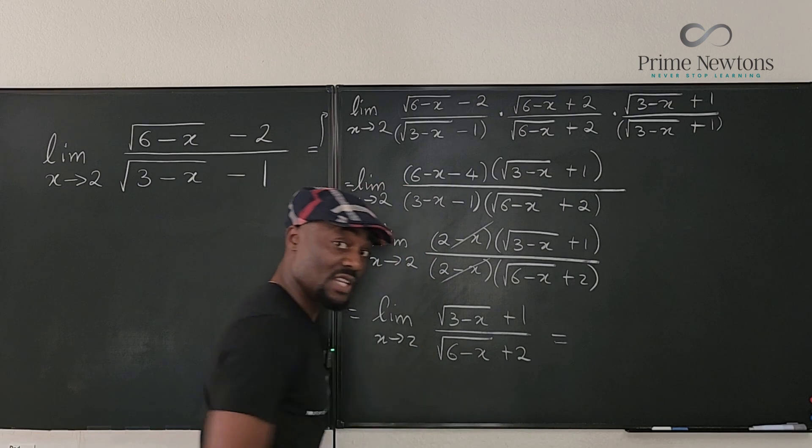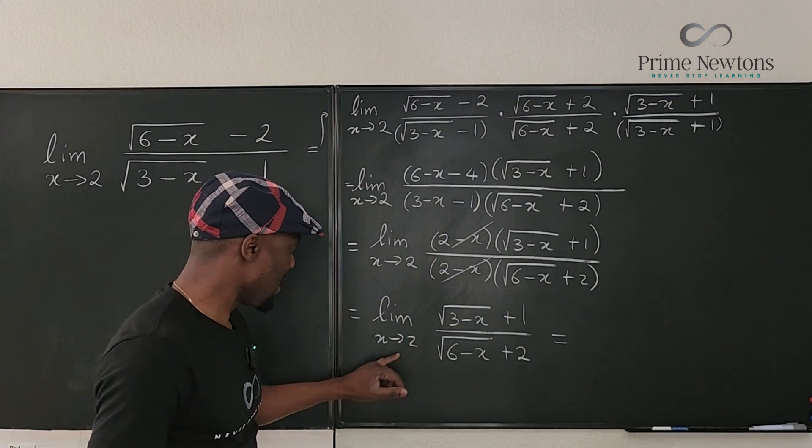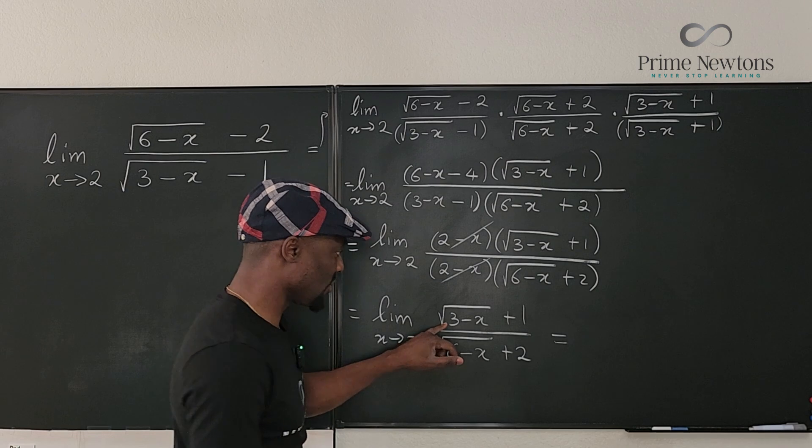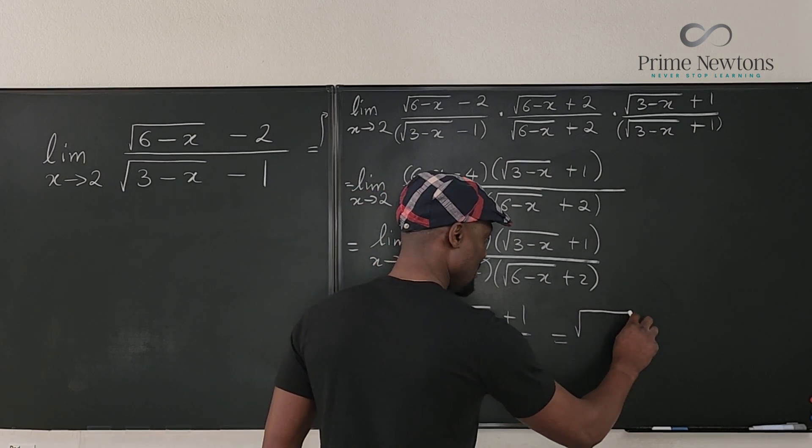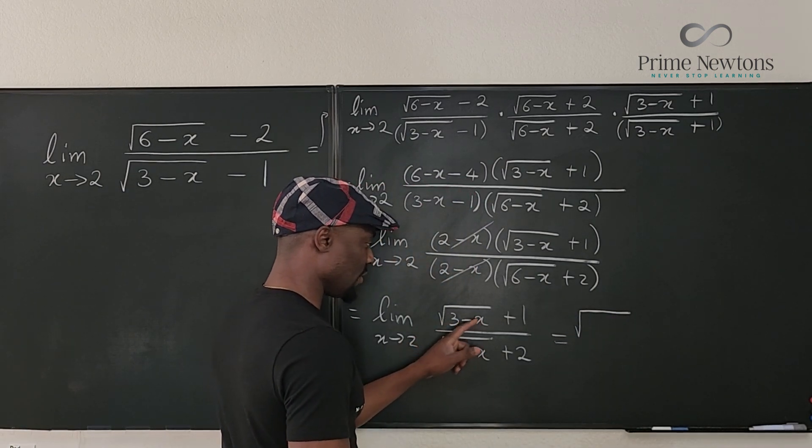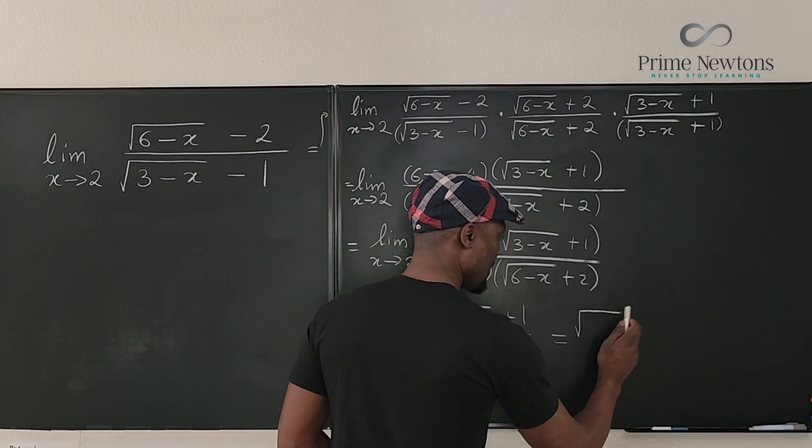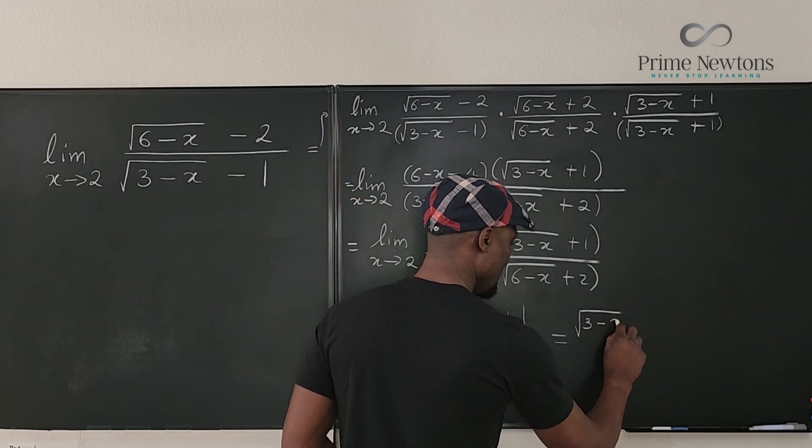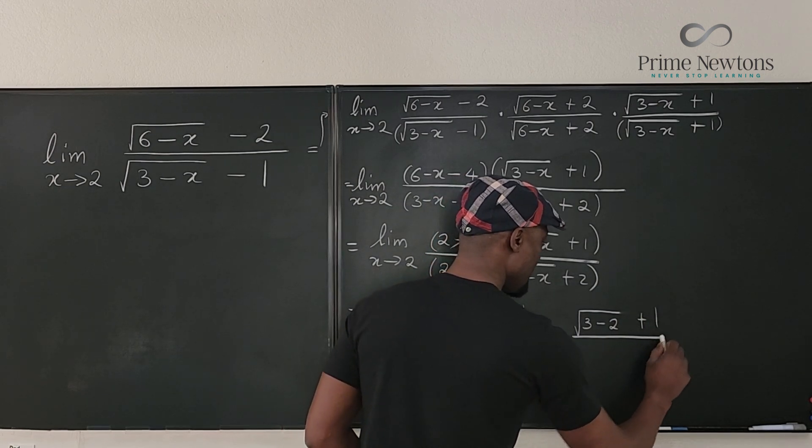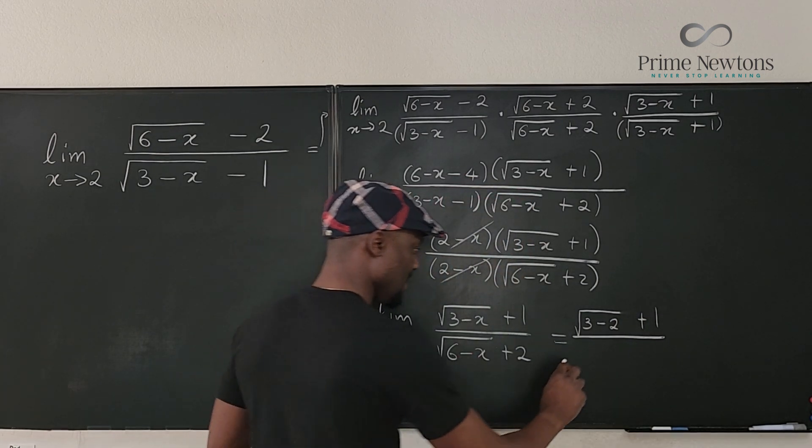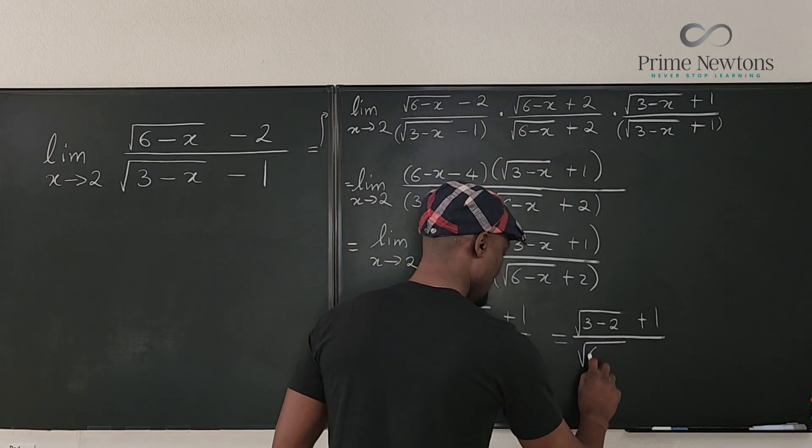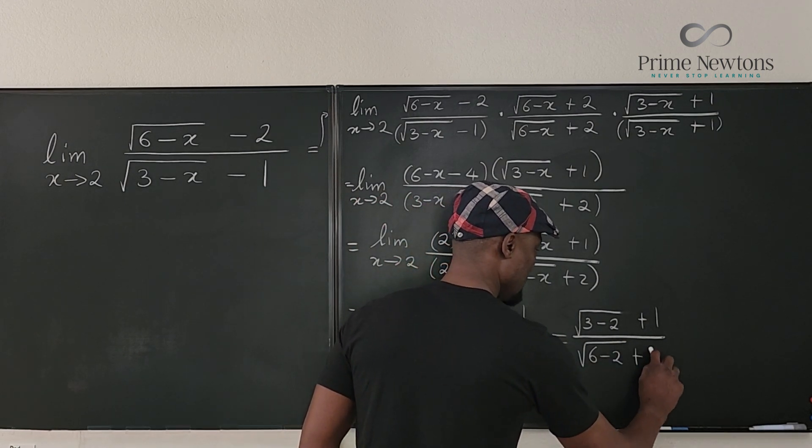Well, let's see if plugging in 2 would give us the answer. If I plug in 2 into this expression, it's going to be the square root of 3 minus 2. What is 3 minus 2? 1. Let's write it: 3 minus 2 plus 1. Plug in 2 here is going to be the square root of 6 minus 2 plus 2.